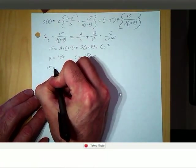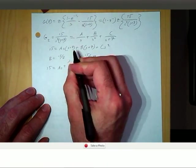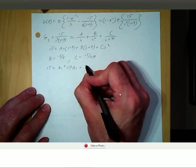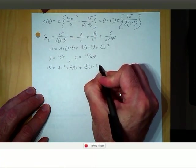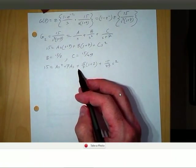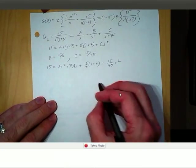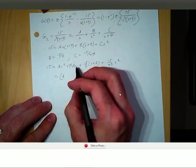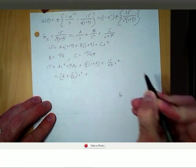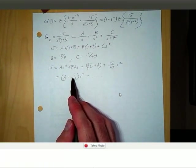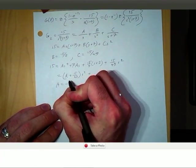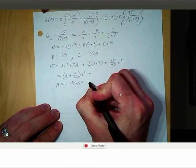We substitute B and C back to find A. We get 15 equals A times S-squared plus 7A times S, plus 15 over 7 times S plus 7, plus 15 over 49 times S-squared. Grouping S-squared terms, we get A plus 15 over 49. Since there are no S-squared terms on the left-hand side, this must equal zero, so A equals negative 15 over 49, or negative C.